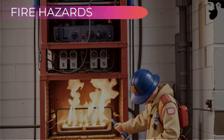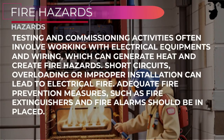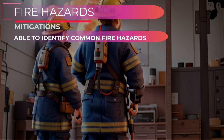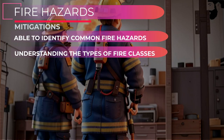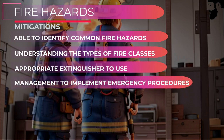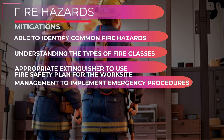Next, fire hazards. Testing and commissioning activities often involve working with electrical equipment and wiring, which can generate heat and create fire hazards. Short circuits, overloading, or improper installation can lead to electrical fires. Adequate fire prevention measures, such as fire extinguishers and fire alarms, should be in place. Personnel must be equipped in recognizing common fire hazards in electrical installations and understanding the types of fire classes and the appropriate extinguisher that should be used. Management should implement emergency evacuation procedures in the event of a fire and establish a fire safety plan for the worksite.